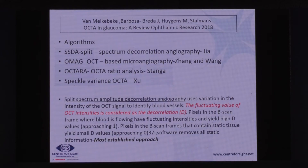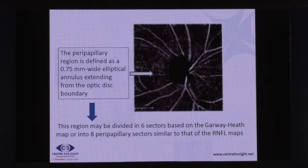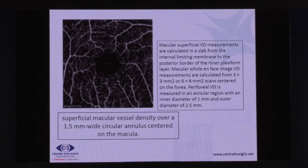Various algorithms have been developed, the most common being SSADA — split-spectrum amplitude decorrelation angiography — by Jia and OMAG, also adopted by Cirrus and others. The split-spectrum approach uses variation in OCT signal intensity to identify blood vessels; fluctuating OCT intensity values are considered decorrelation and taken to represent blood vessels. In an OCTA scan of the optic disc, a 4.5 millimeter scan is taken and the software automatically fits an ellipse at the optic disc margin. The peripapillary region is a 0.75-wide elliptical annulus extending from the optic disc boundary, divided into six sectors.